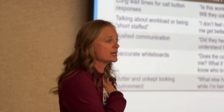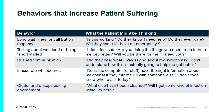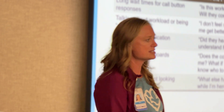When we asked patients what we do that causes increased suffering, their responses included: long wait times for the call button, talking about workload or being short-staffed — which is part of regular conversation but really bothers patients to hear — rushed communication, inaccurate whiteboards where the date is days off or the wrong caregivers are listed, and clutter or unkempt-looking environments with trash or dirty linens. Patients don't know who's caring for them, and some don't see the sun rise or set, so they have no idea what day it is — keeping the whiteboard updated helps reduce their anxiety.